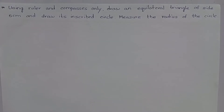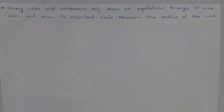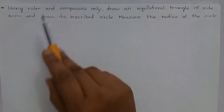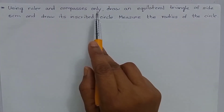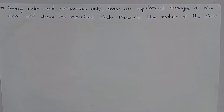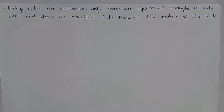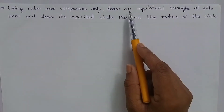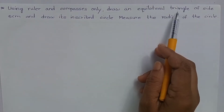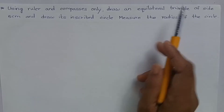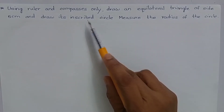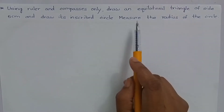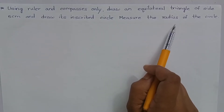Namaste. Welcome to Blishon concept teaching. Let's do the construction using ruler and compasses only. Here they have given one instruction: we have to use only ruler and compass for construction. Draw an equilateral triangle of side 5 cm and draw its inscribed circle. Measure the radius of the circle.